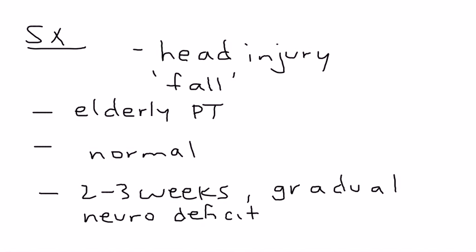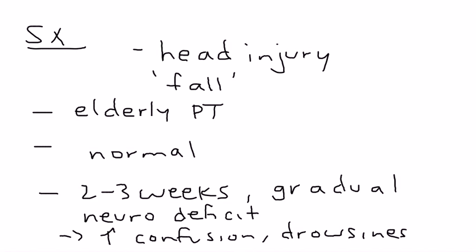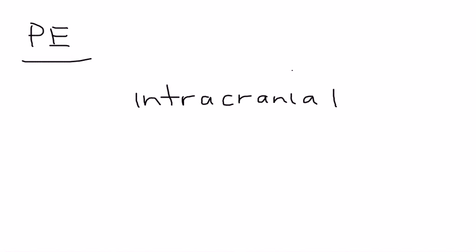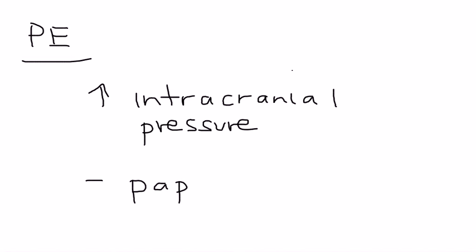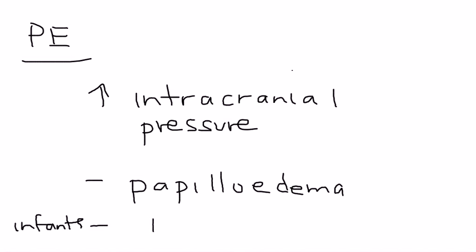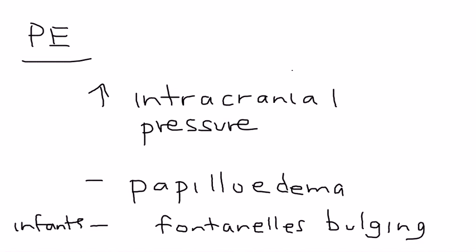That is a very classic presentation. By neurologic deficit, the patient will have increased confusion, personality changes, and drowsiness — clearly something is wrong, and the patient is brought to the emergency room. Headache can also be present. On physical exam, look for signs of increased intracranial pressure, because the bleed is building up in the subdural space. You check the eyes for papilledema, and in infants under the age of one, you can see bulging of the anterior fontanelles as a sign of increased intracranial pressure.